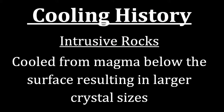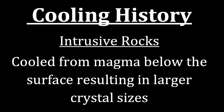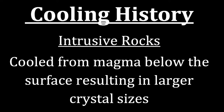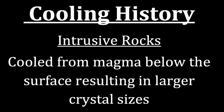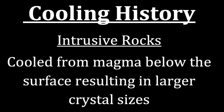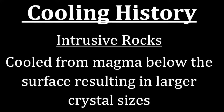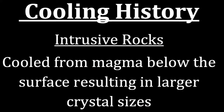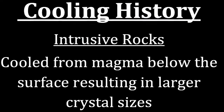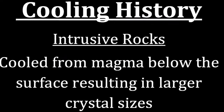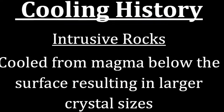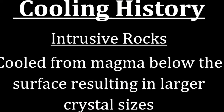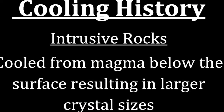The cooling history for both pegmatitic and phaneritic is intrusive, meaning the crystals formed while the magma was still below the surface of the earth. Because it takes longer for magma to cool below the surface, there is more time for the crystals to grow, which is why they are larger in size.